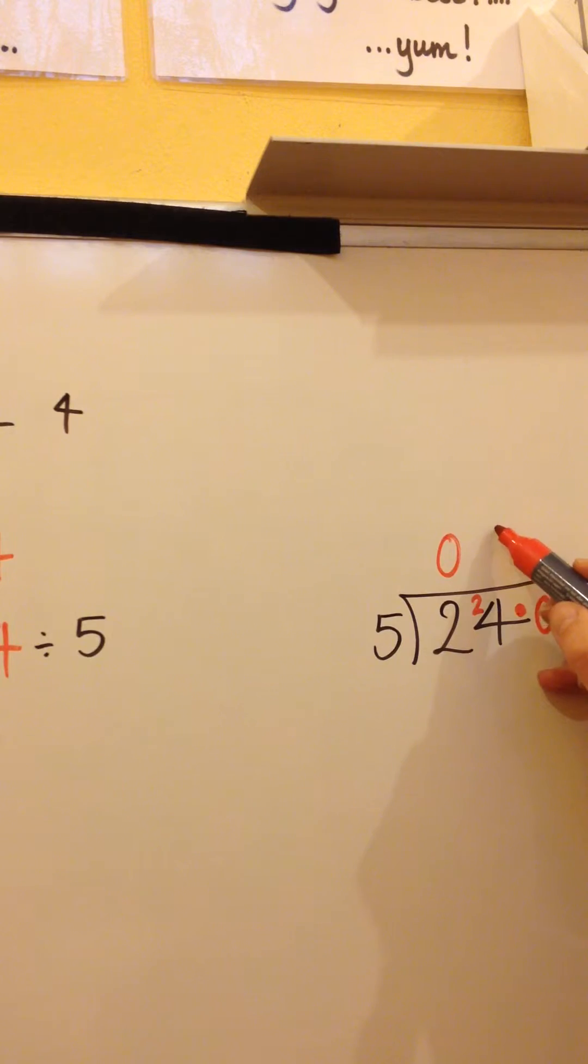The answer is 4. There's a remainder of 4, so I'm going to put it in front of the first zero. So now I can say how many fives in 40? The answer is 8. As I have no more remainder, I can cross off those two zeros, I won't be needing them. The answer is 4.8, which makes a lot more sense than 4 remainder 4.